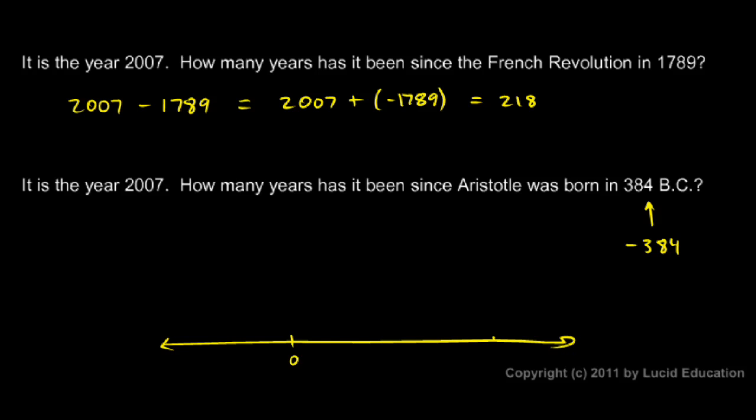If the year zero is here and 2000 is here, we have positive numbers going to the right. 384 BC would be over here. So this would be a negative number going over here to the left.